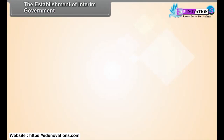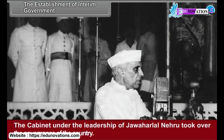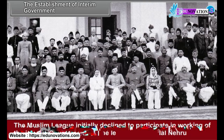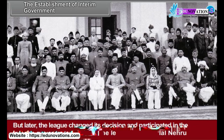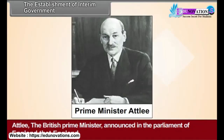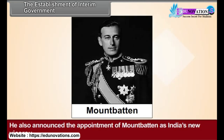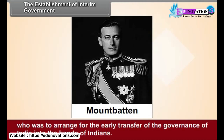The Establishment of Interim Government: In such anarchic conditions, the Viceroy Lord Wavell formed an interim government of Indian representatives. The Cabinet under the leadership of Jawaharlal Nehru took over the governance of the country. The Muslim League initially declined to participate in the working of the interim government, but later changed its decision and participated. The League pursued the policy of obstruction; therefore, the interim government could not work smoothly. The British Prime Minister announced in the Parliament of England that England would transfer all of its government responsibility not later than June 1948. He also announced the appointment of Mountbatten as India's new Viceroy, who was to arrange for the early transfer of the governance of India into the hands of Indians.